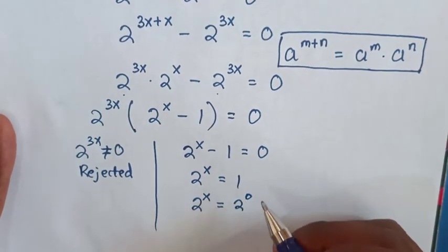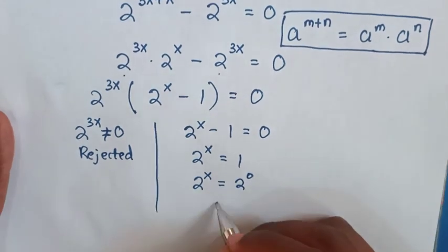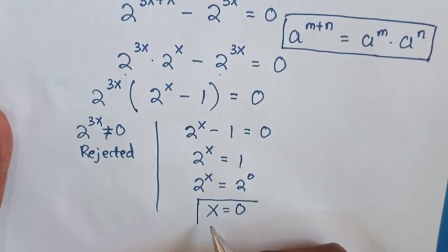Because 2^0 is equal to 1, then we compare same base but different powers, then x is equal to 0. Therefore this is our final answer.